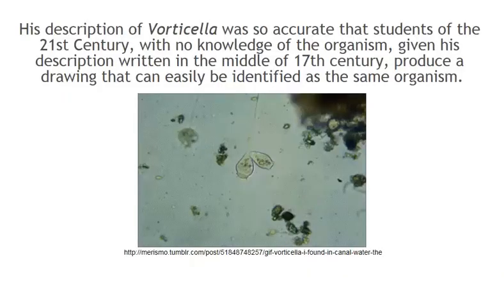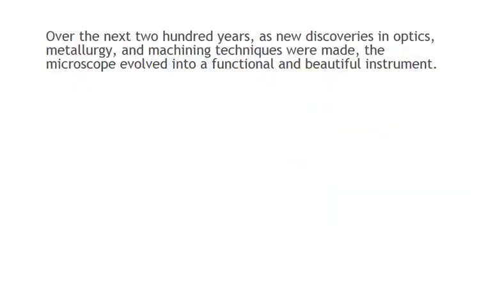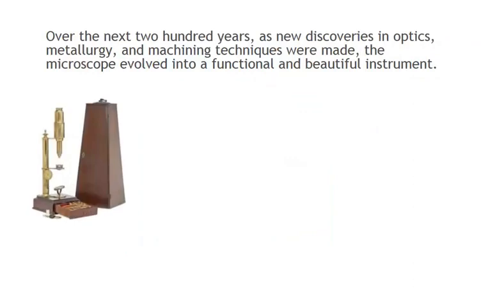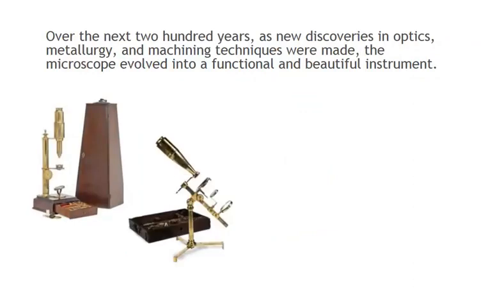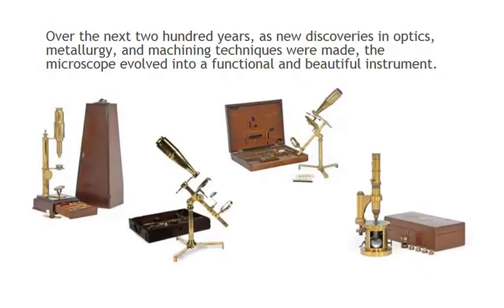The description of the Vorticella was so accurate that students of the 21st century with no knowledge of the organism, given his description written in the middle of the 17th century, produce a drawing that can easily be identified as the same organism. Over the next 200 years, as new discoveries in optics, metallurgy, and machining techniques were made, the microscope evolved into a functional and oftentimes beautiful instrument.